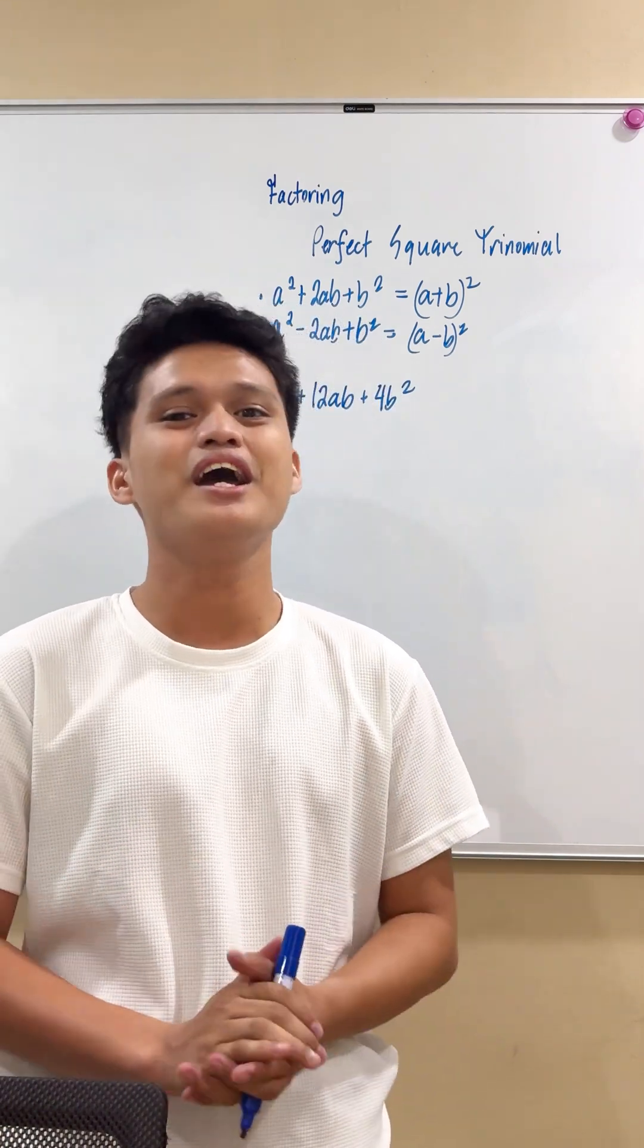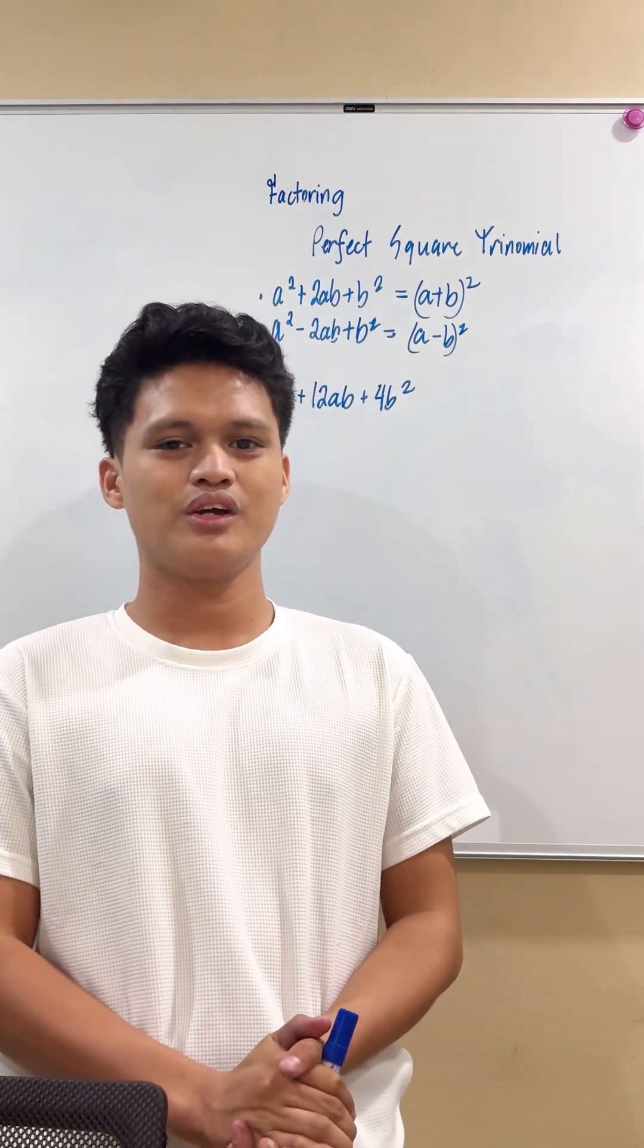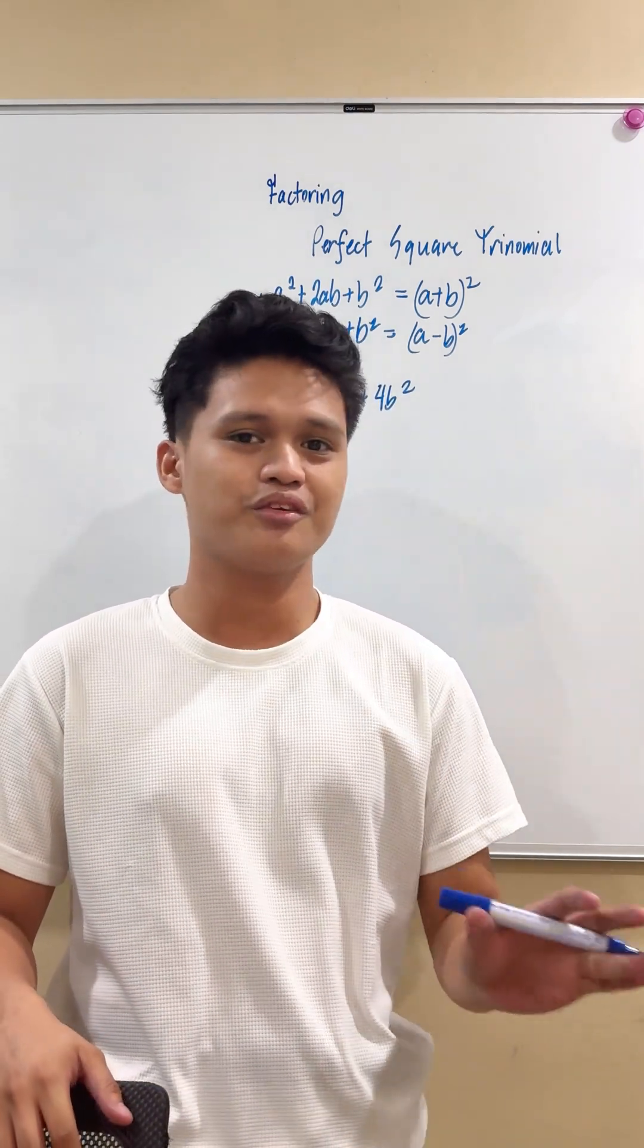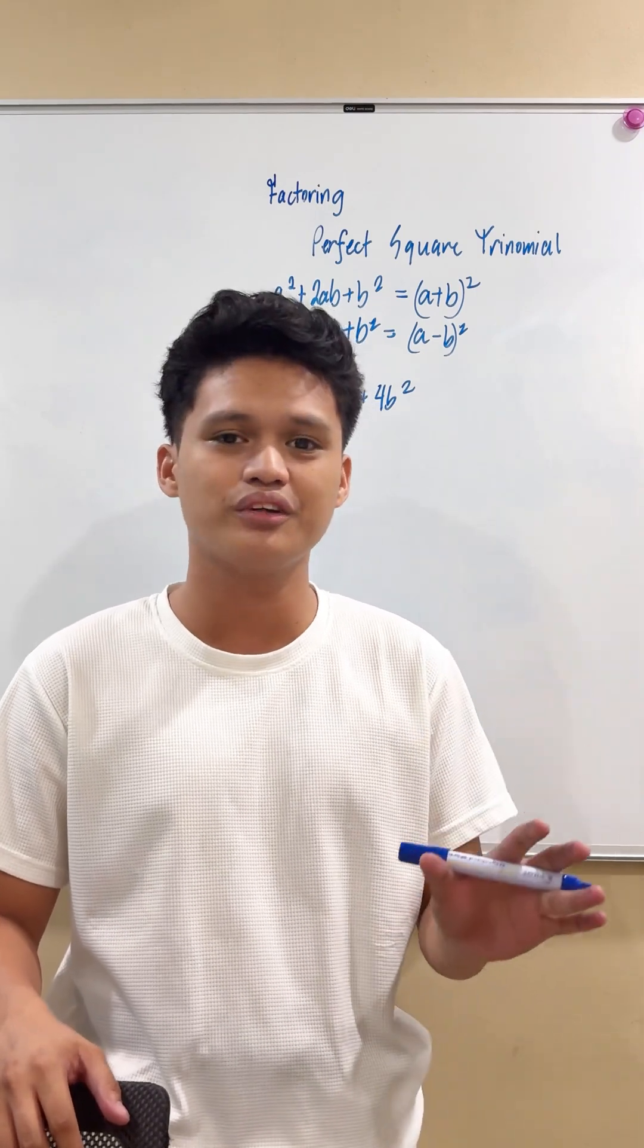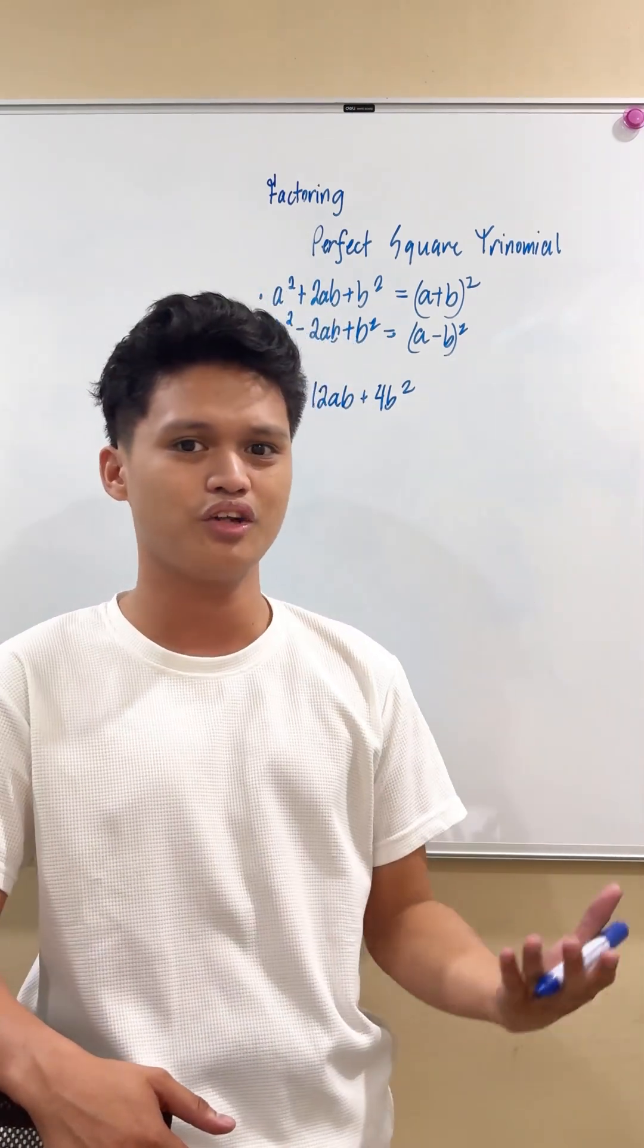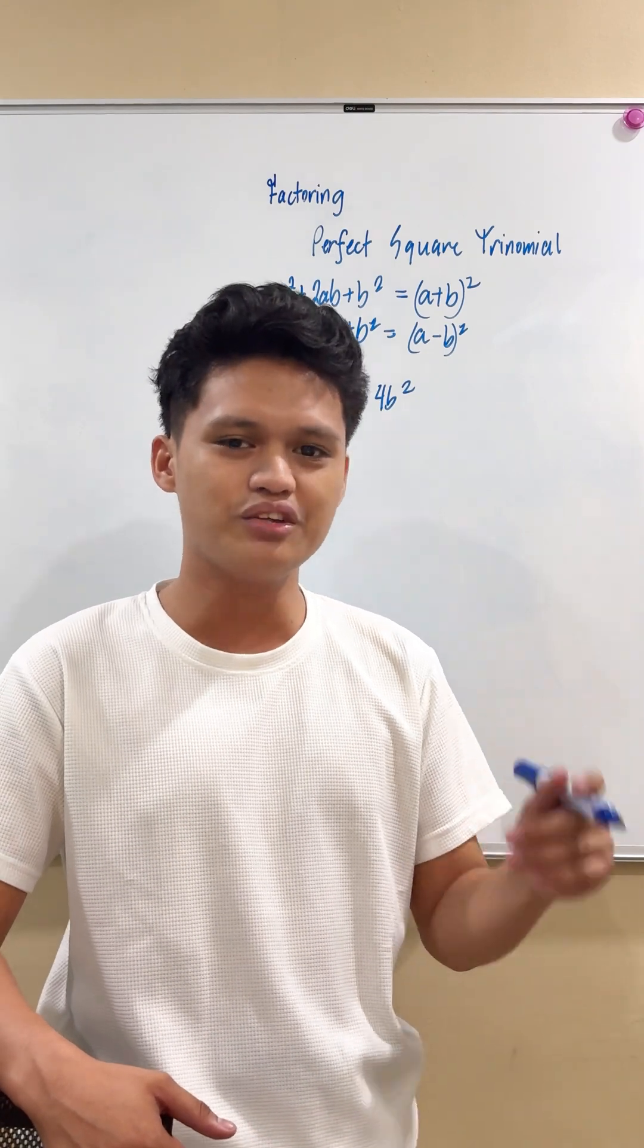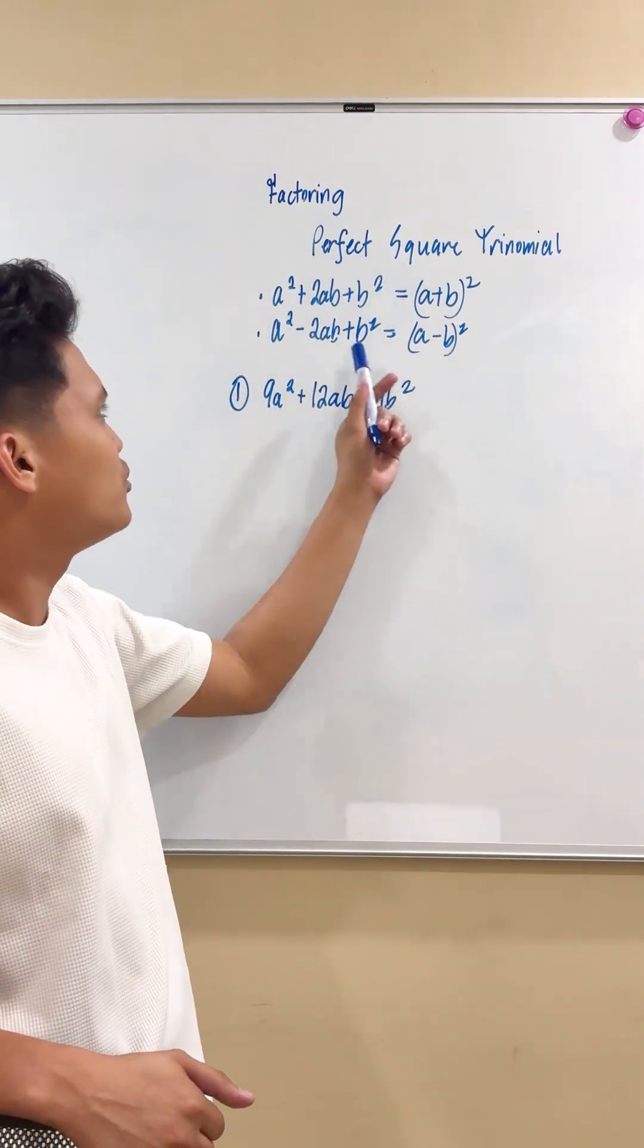And the topic for this video is all about factoring perfect square trinomials. So the first thing we need to do when we factor such perfect square trinomials is to make sure that the expression on hand is actually a perfect square trinomial. With this, we need to make sure that the format follows these examples.